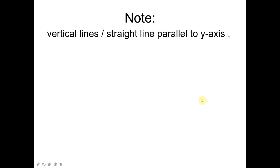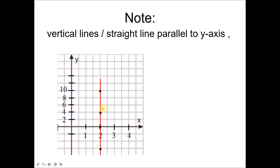How about vertical lines, or straight lines which are parallel to the y-axis? For example, this straight line has points (2,10), (2,4), and (2,0). You can see that along this line, all points have an x-value of 2. Hence this straight line can be represented by the equation X equals to 2. So whenever you have a line which is parallel to the y-axis, it can be represented by the equation X equals to a constant value.